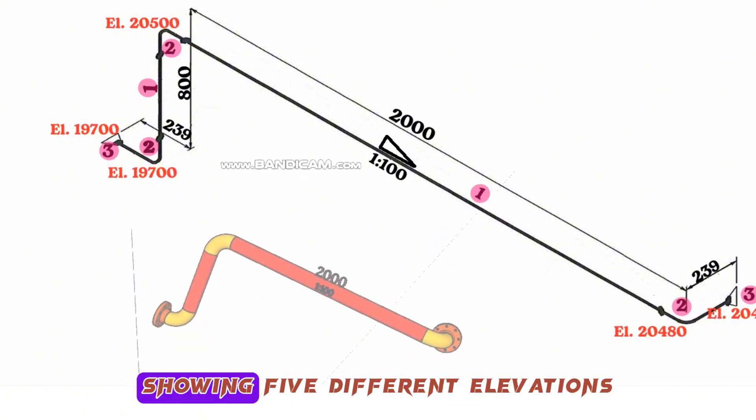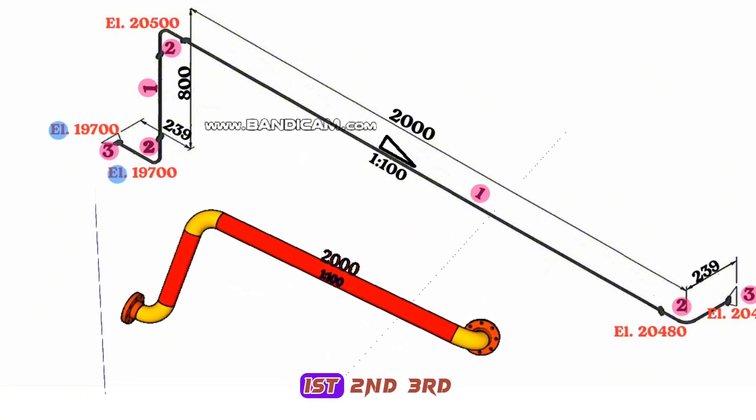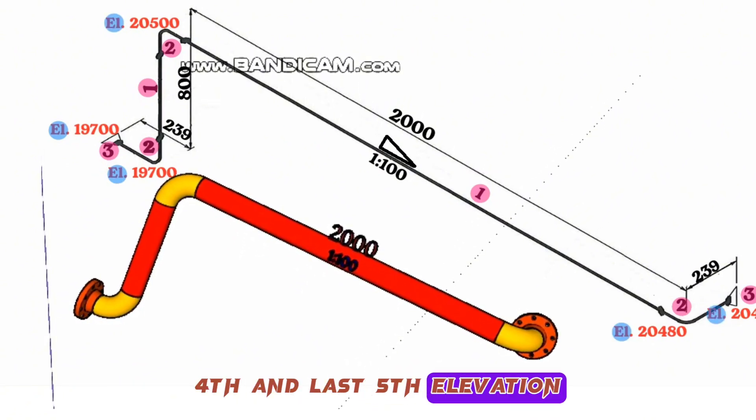Also, in this pipeline showing five different elevations: first, second, third, fourth, and last fifth elevation.